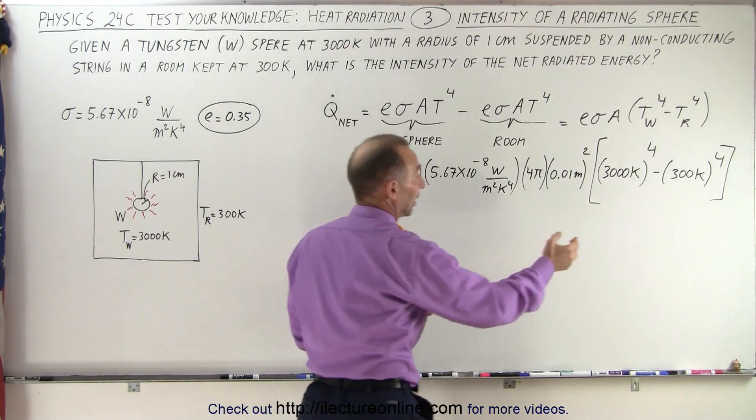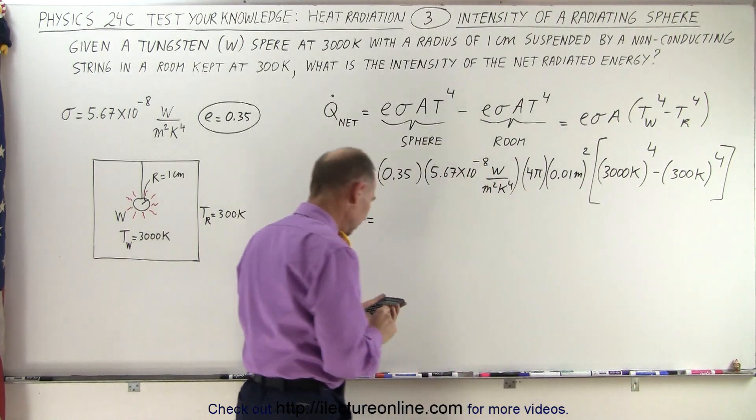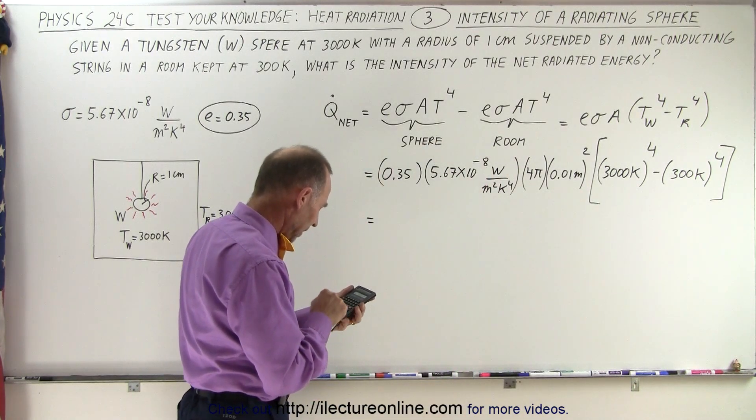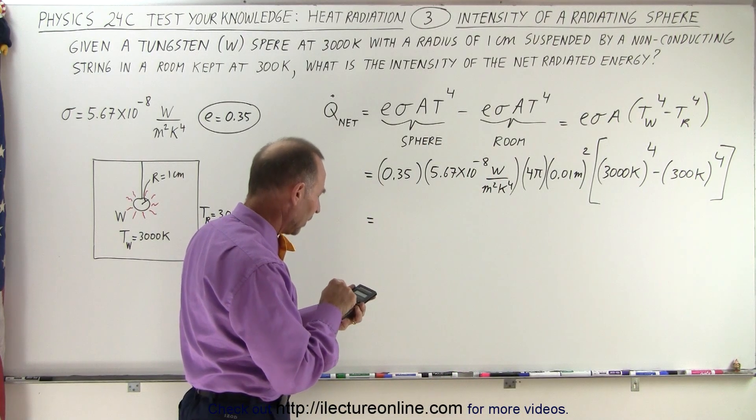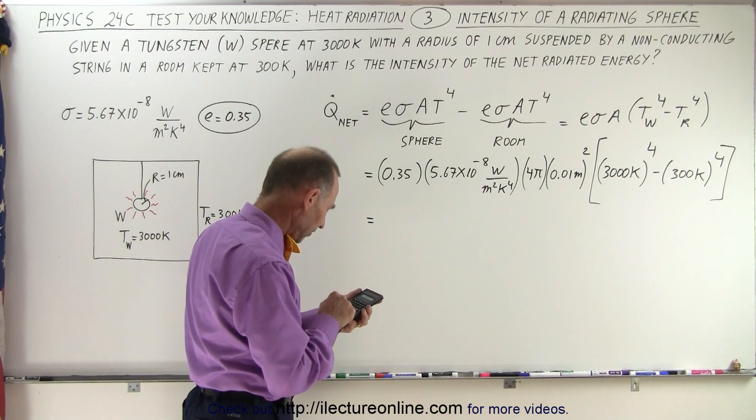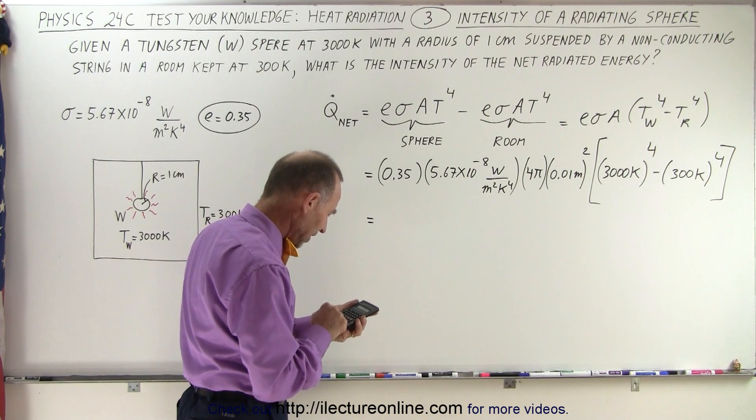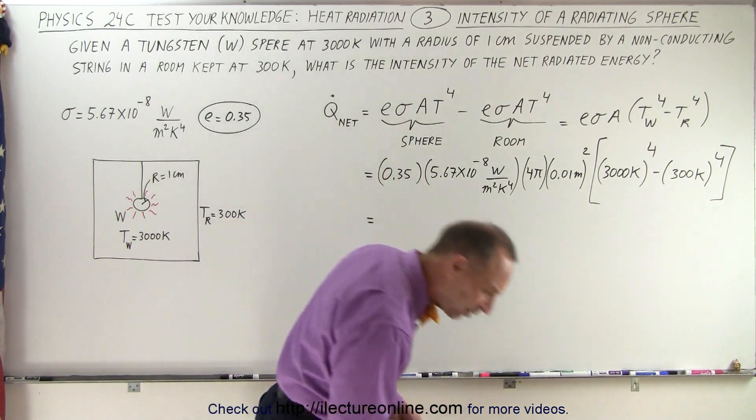So, remember that this factor right here is almost insignificant compared to this quantity to the fourth power, that we multiply that times 0.01 squared times 4 times pi times 5.67e to the minus 8 and times 0.35 equals, and that gives us,